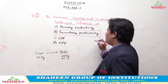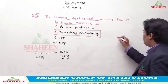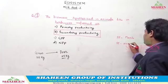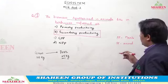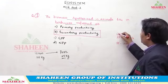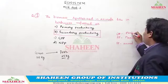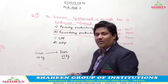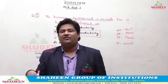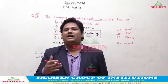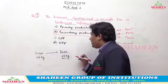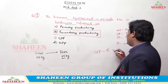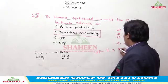In plants, what happens? Primary productivity. After respiratory loss, it is called net primary productivity. So total food of plant: GPP minus R is called NPP.